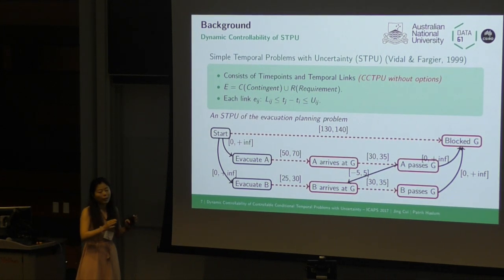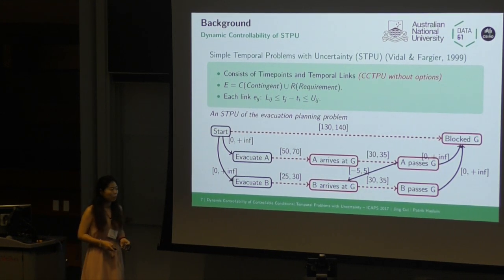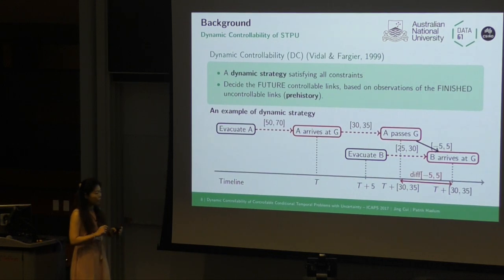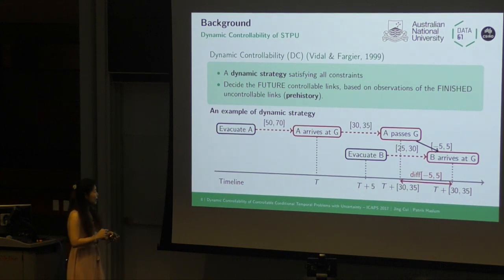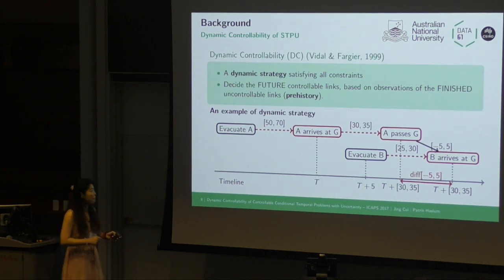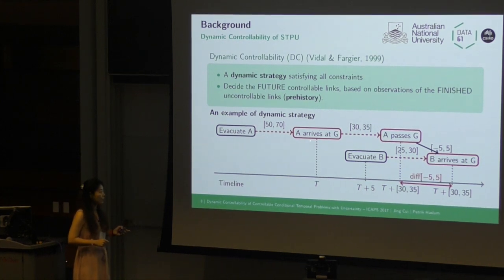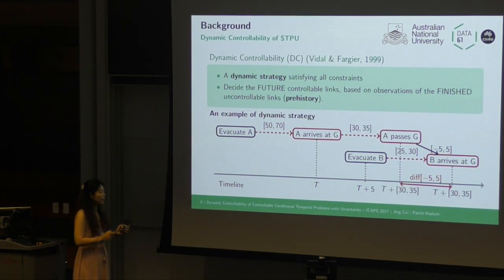When a contingent link is finished, we can observe the exact duration. Because of the uncertainty in these temporal problems, the authors introduced three levels of controllability, among which dynamic controllability is the most interesting. If an STPU is dynamically controllable, there is a dynamic strategy which can satisfy all constraints. In this strategy, every decision is based on past observations, also called prehistory — the uncontrollable links finished before that time point.